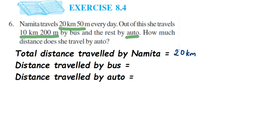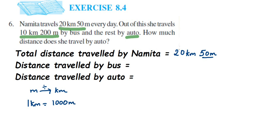Total distance traveled by Namita is 20 kilometers and 50 meters. We have to convert everything into kilometers. Here 50 meters needs to be converted to kilometers. When converting a smaller unit to a higher unit — like meters to kilometers — you always divide. We know that 1 kilometer equals 1000 meters, so we divide 50 by 1000.